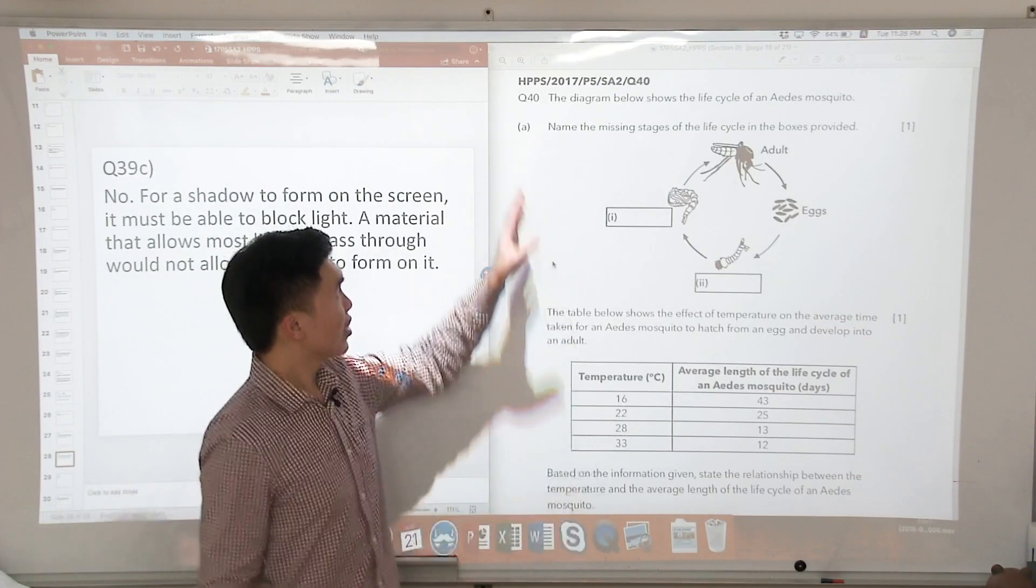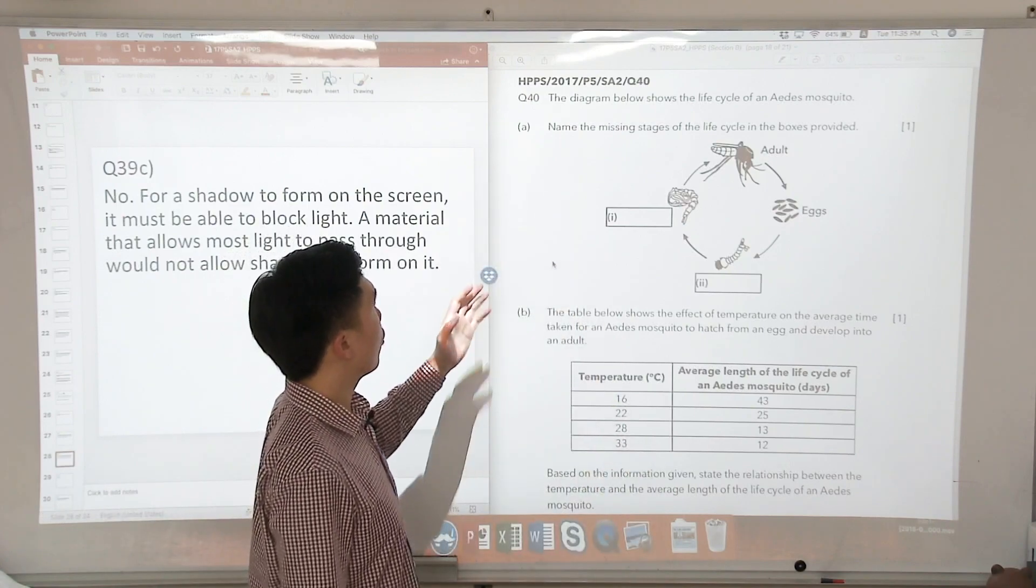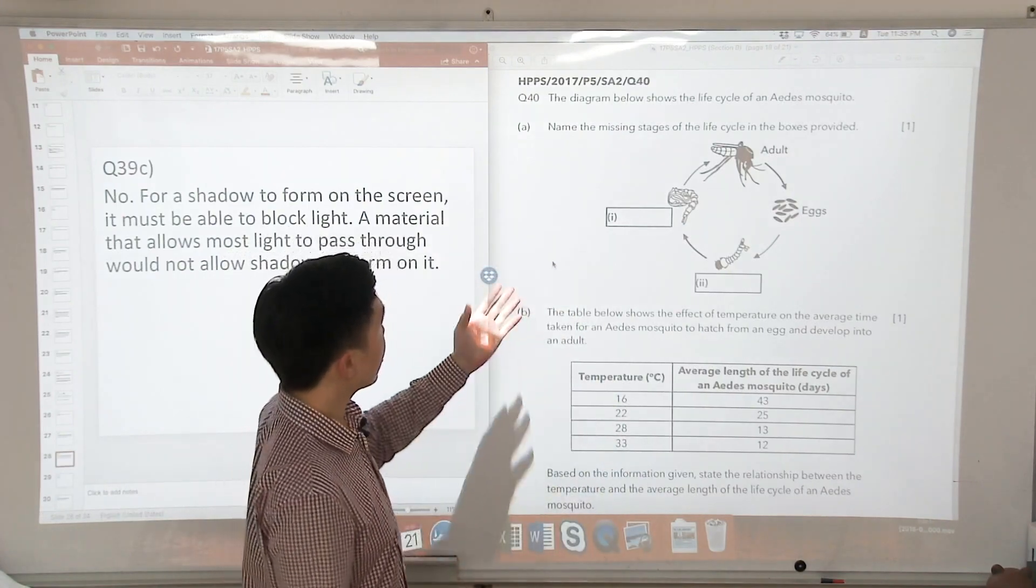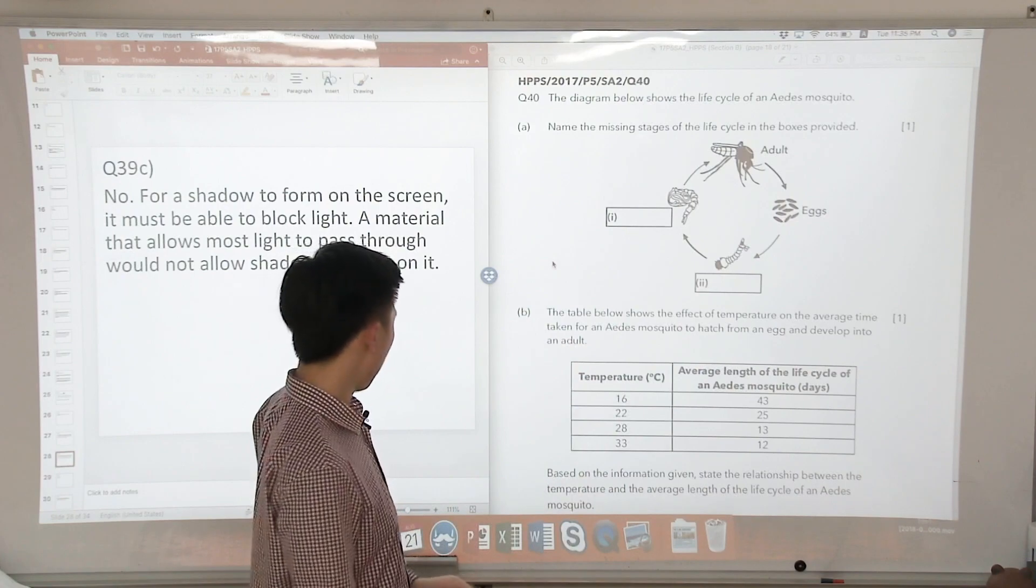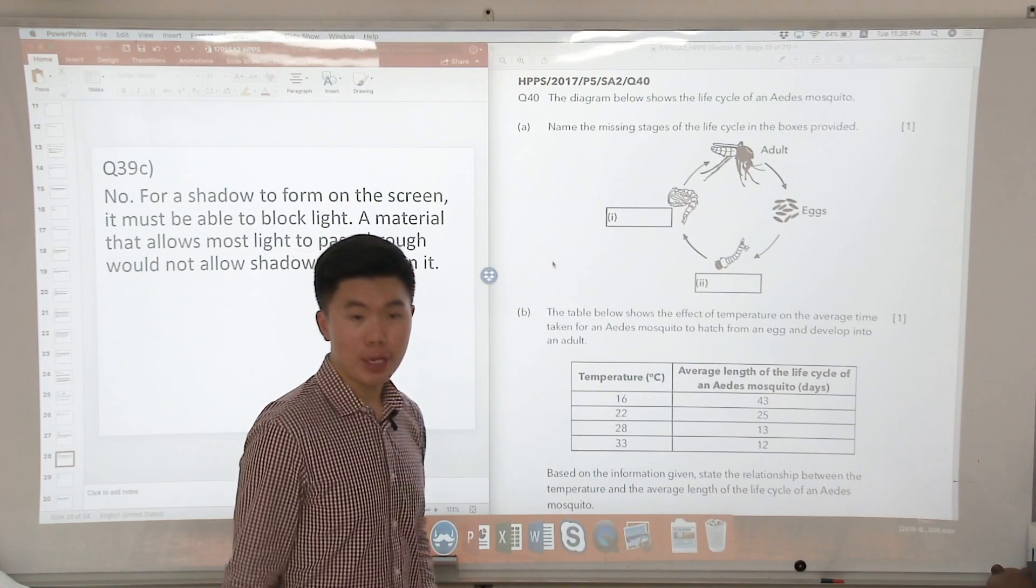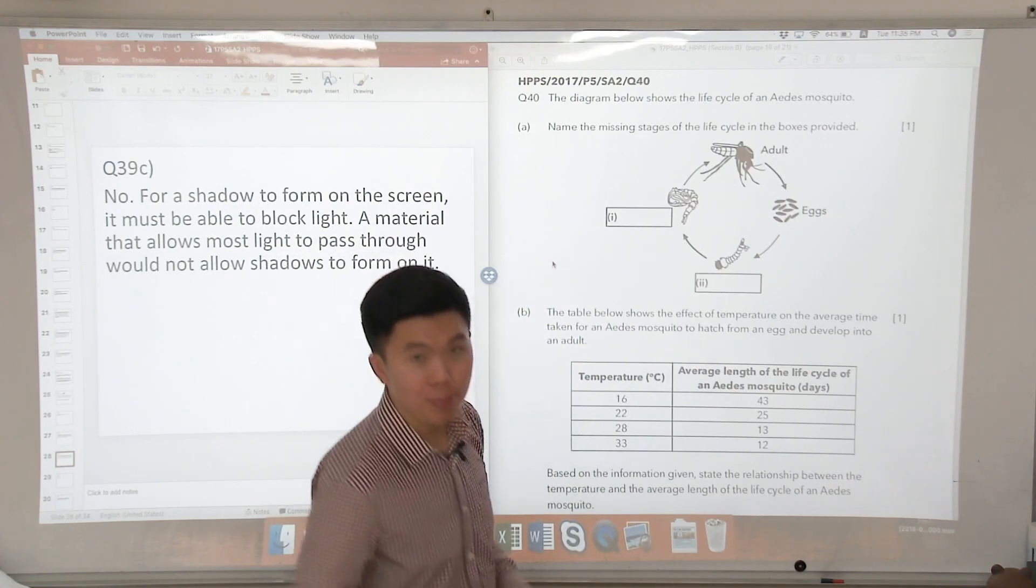Okay, so for question 40, the diagram below shows the life cycle of an Aedes mosquito. Name the missing stages of the life cycle in the boxes provided. This shouldn't be much of an issue. This was taught in P4.